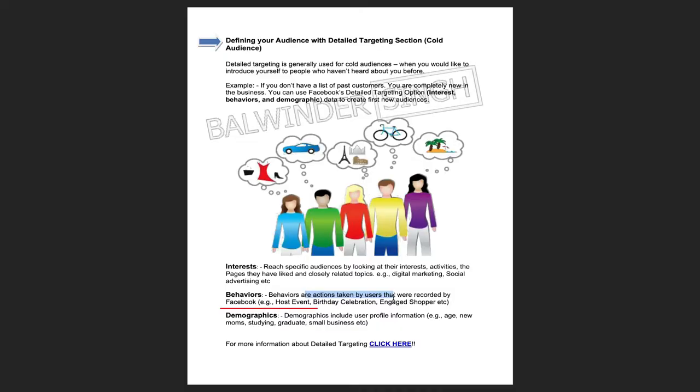That's the power of Facebook ads. Under demographic, it includes user information like where they live, age, new mom, graduating student, small business owner, and many other things — what their status is, what they do. Facebook has all this data, and using that data you can easily find your dream audience. That's how we can find our cold audience.